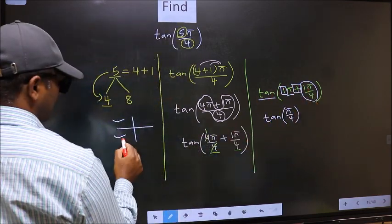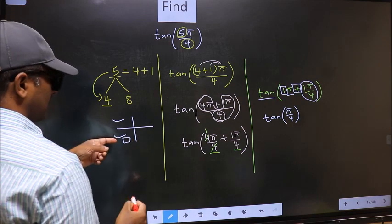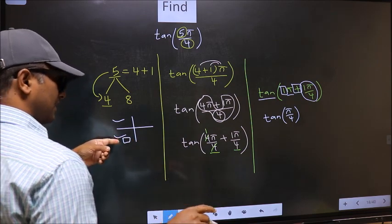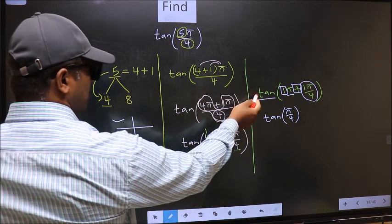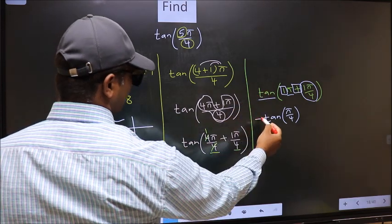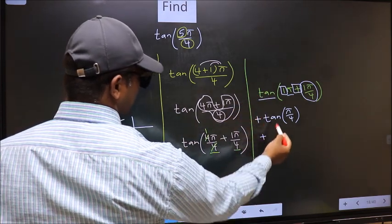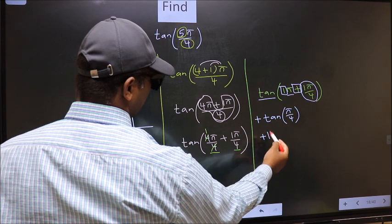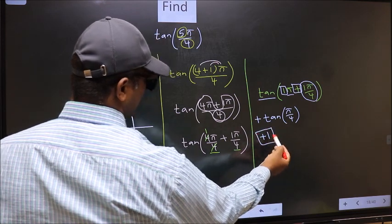That means the angle lies in the third quadrant. In the third quadrant, tan is positive, so we put plus. Therefore, tan(π/4) = 1. This is our answer.